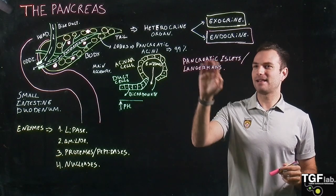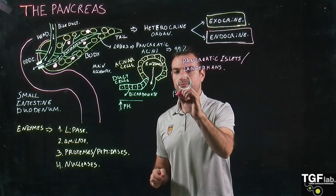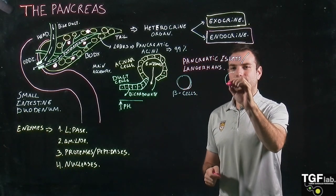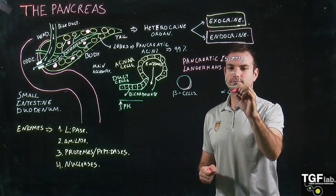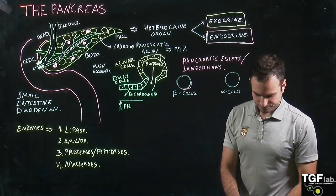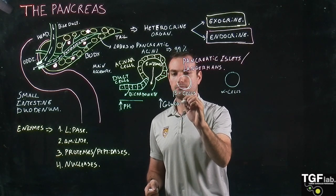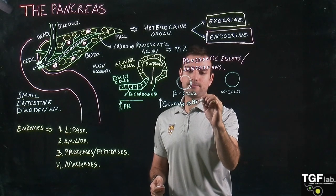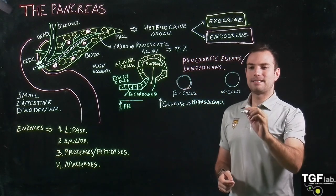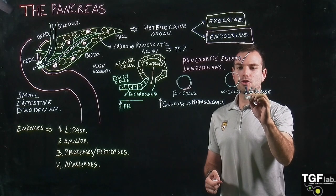We have two different types of cells in the pancreatic islets. We have the beta cells and we also have the alpha cells. The beta cells are going to respond to high glucose levels, also called hyperglycemia. But the alpha cells are going to respond to low glucose levels, also called hypoglycemia.